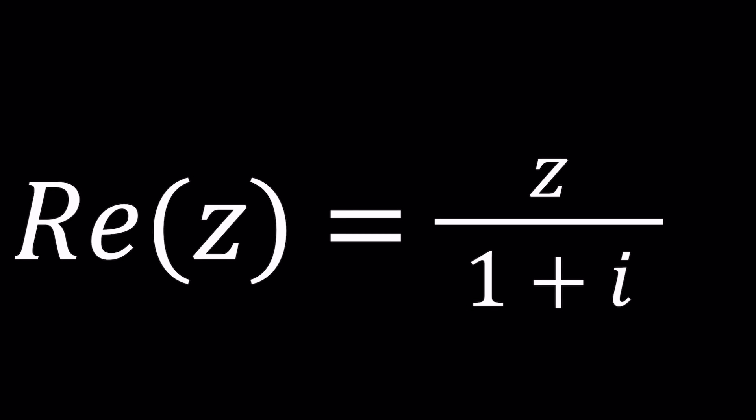Hello everyone, welcome to a plus bi. This channel is all about complex numbers and in this video we're going to be solving a real problem. Well, a complex problem with a real part. So we have real part of z equals z divided by 1 plus i. Well, what is z? z is a complex number.